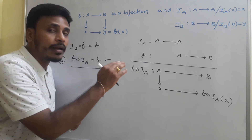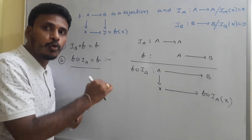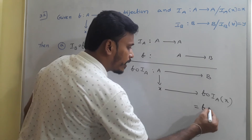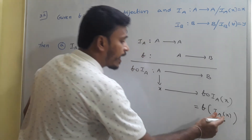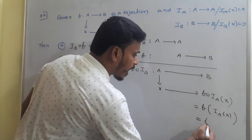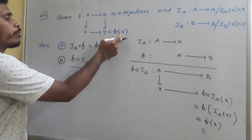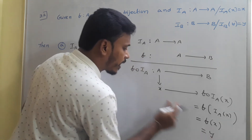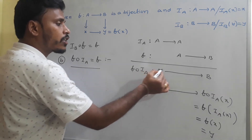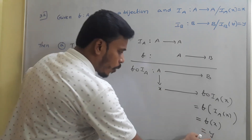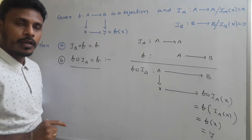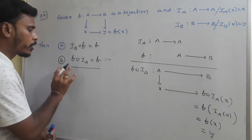We don't say that element as y directly — we need to prove it as y. Initially, take that element as f ∘ iA(x), which is f(iA(x)). As per the identity definition, the identity element connects x to x only, so iA(x) = x. Therefore f(iA(x)) = f(x), and from the definition of f, f(x) = y. So it connects x to y. At the end, f ∘ iA is a function from A to B that connects x to y, just like f. So f ∘ iA = f.